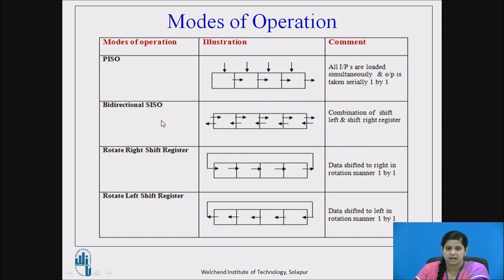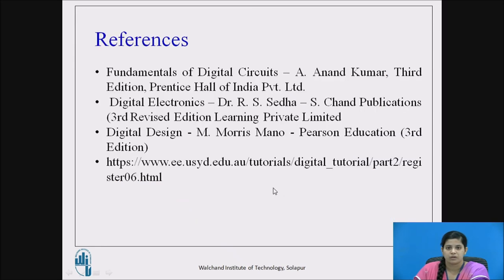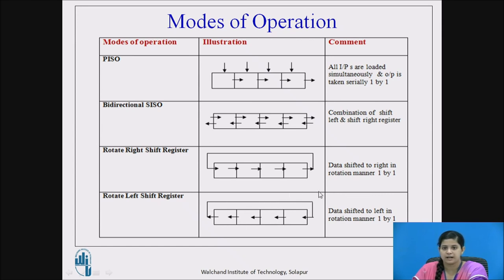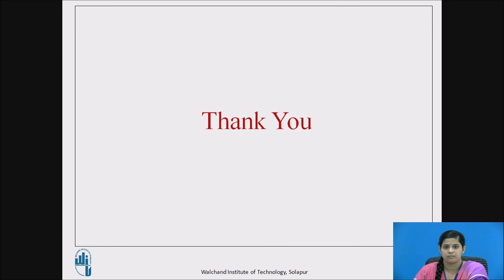According to the shift modes, there are different applications of shift registers. The first is bidirectional shift register — a serial in serial out shift register that can move data from right to left or left to right. The second is rotate right shift register, where data is rotated towards the right by continuously shifting right. The last type is rotate left shift register, where data is shifted and rotated towards the left. The applications will be covered in the next lecture. Thank you.